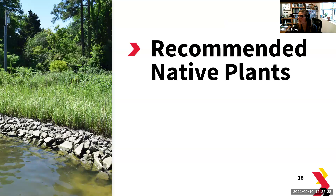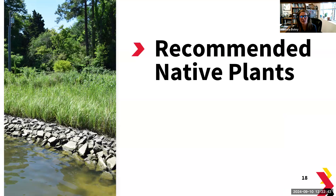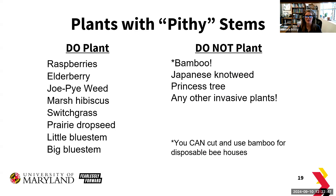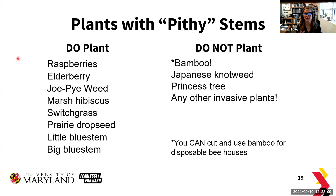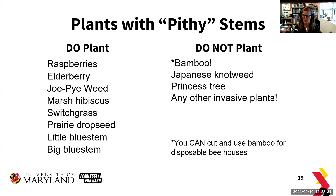Moving on to recommended native plants — what do I suggest for attracting more insects? I talk a lot about plants with pithy stems: stems that are either easy to chew out or are already hollow, because cavity-dwelling bees tend to do nesting in these plants. Examples include raspberries — which are also a really high pollinator plant — elderberries, Joe Pye weeds, marsh hibiscus, and switch grasses. A lot of native grasses are hollow inside, and because we have so many different sizes of bees, these plants vary in stem diameter.